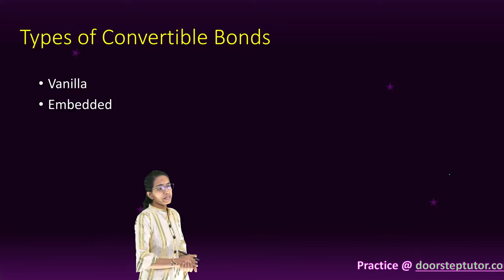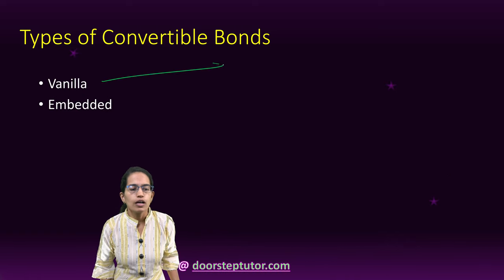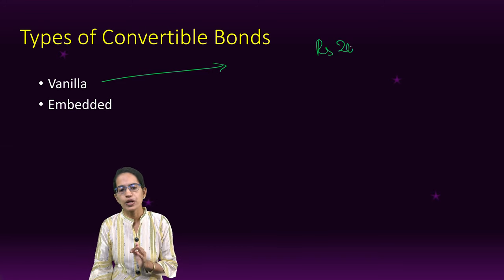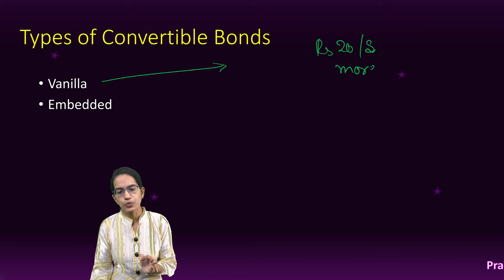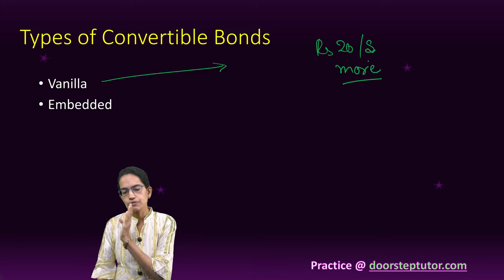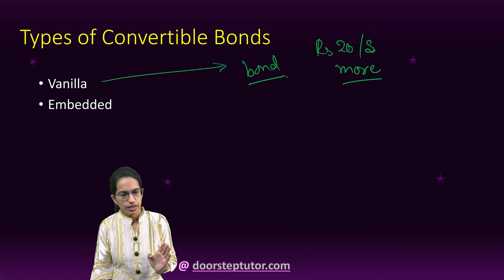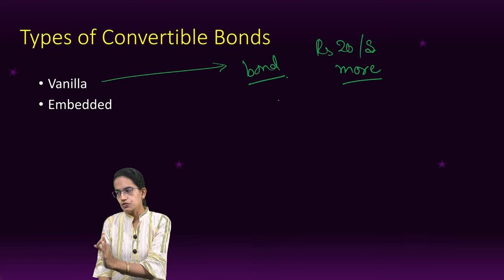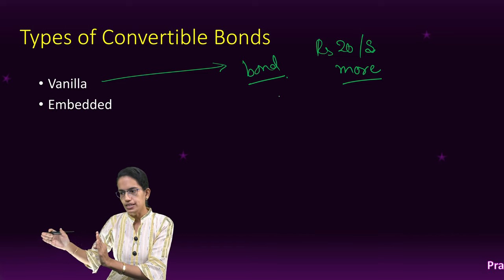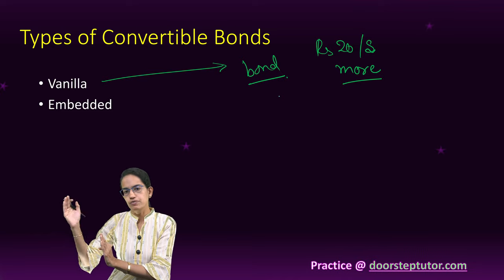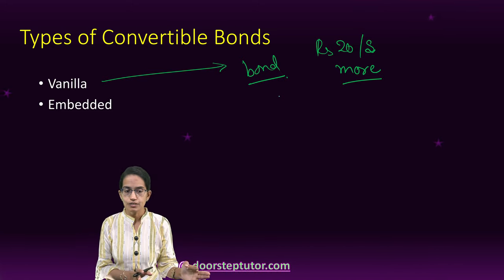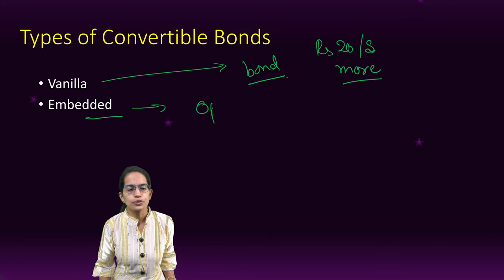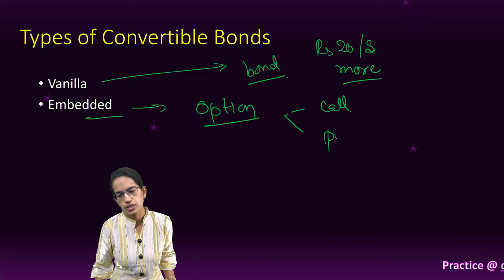The next type is vanilla and embedded convertible bonds. A vanilla convertible bond means that if the stock price I commit to is 20 rupees per share, as soon as the price goes above 20 rupees I would have the option to convert it into stock; if not, it remains a bond. The contingent bond, by contrast, makes it mandatory to convert once the set price is reached. Embedded means the options — and here there are two kinds: call option and put option.